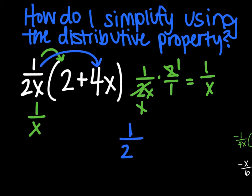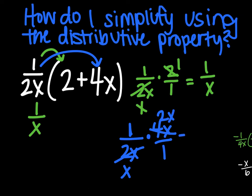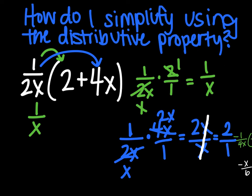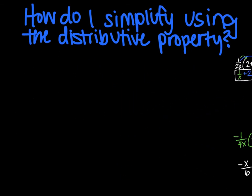Feed the next bird: 1 over 2x times 4x over 1. Simplify before you multiply — divide out 2 — giving x and 2x, so 2x over x. Since the x's cancel, you're left with 2 in the numerator: just plain 2. So the final answer is 1/x + 2. As weird as it looks, that's the final answer.